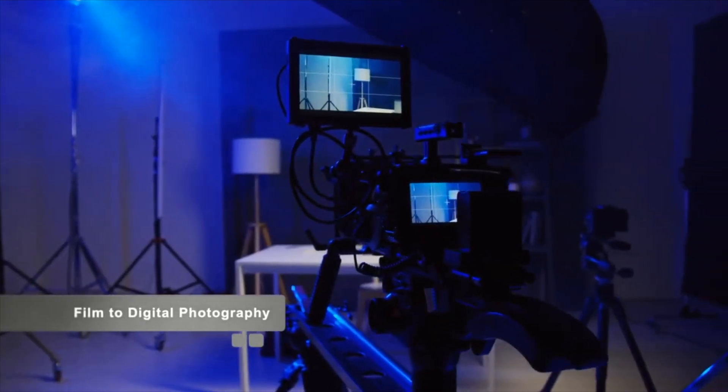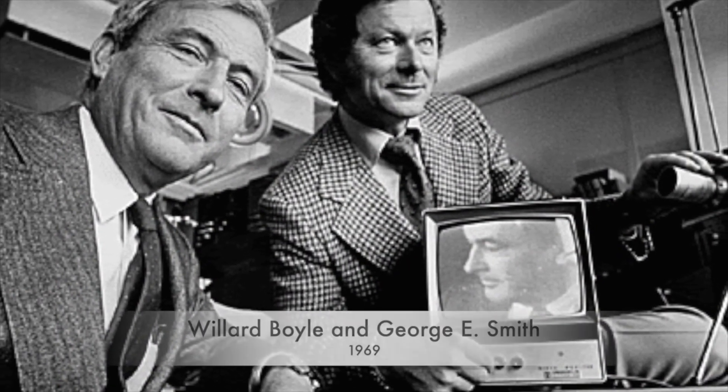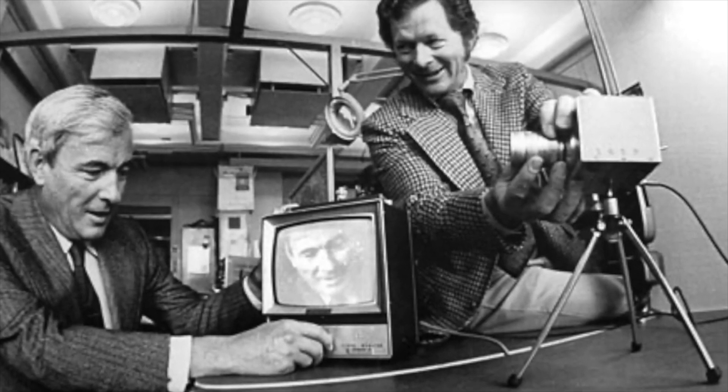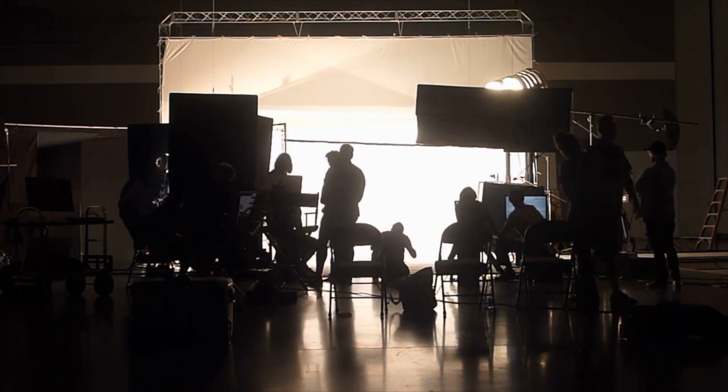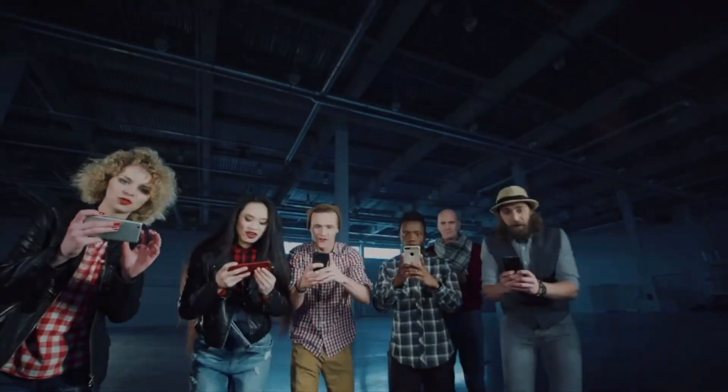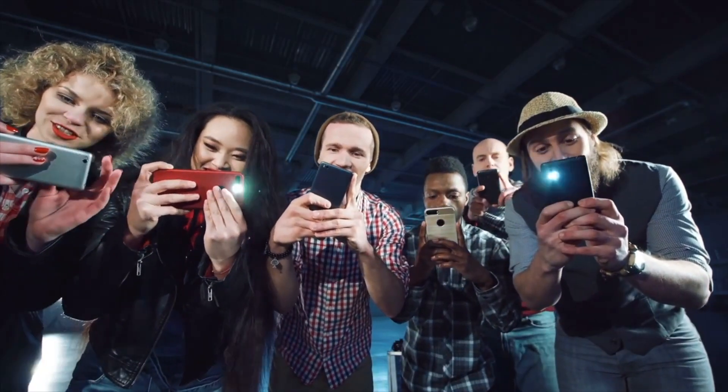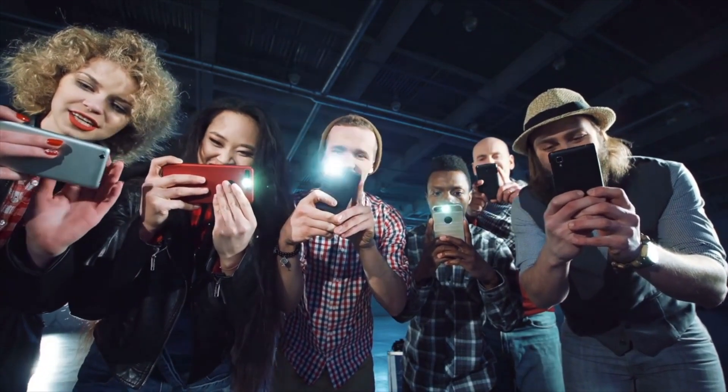The transition from film to digital photography marked another significant milestone in the evolution of camera technology. The invention of the CCD sensor in 1969 by Willard Boyle and George E. Smith paved the way for digital imaging, enabling images to be captured and stored in electronic format. However, it wasn't until the 1990s that digital cameras became commercially viable, offering users the ability to capture, edit, and share images with unprecedented ease. In the 21st century, the proliferation of smartphones has democratized photography like never before, with social media platforms like Instagram and Snapchat further accelerating this shift by allowing users to share images with the world instantly.